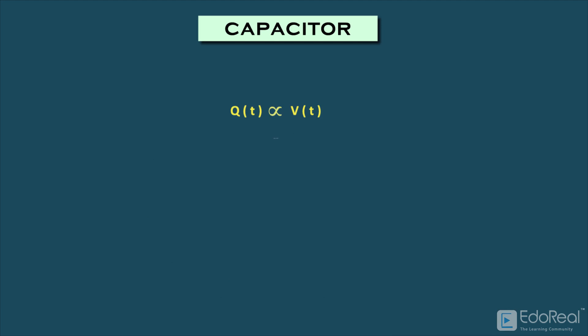Which can be written as Q(t) = C*V(t). Here, C is a proportionality constant. This constant C is also called capacitance.